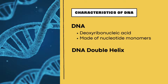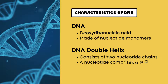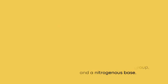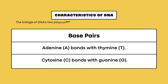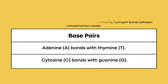DNA, or deoxyribonucleic acid, comprises nucleotide monomers, forming a double helix structure consisting of sugar molecules, phosphate groups, and nitrogen-containing bases. Hydrogen bonds between complementary bases — adenine with thymine, and cytosine with guanine — maintain the stability of DNA's two polynucleotide chains.